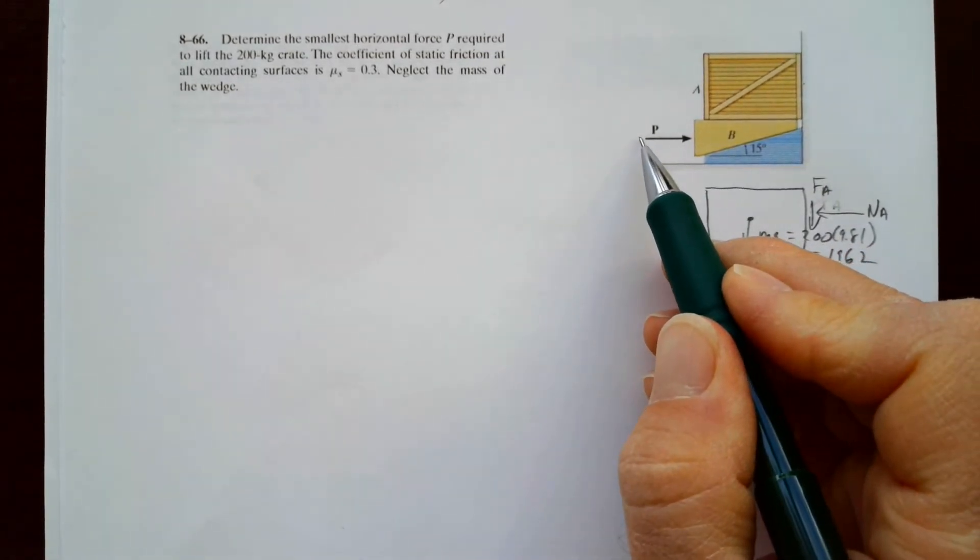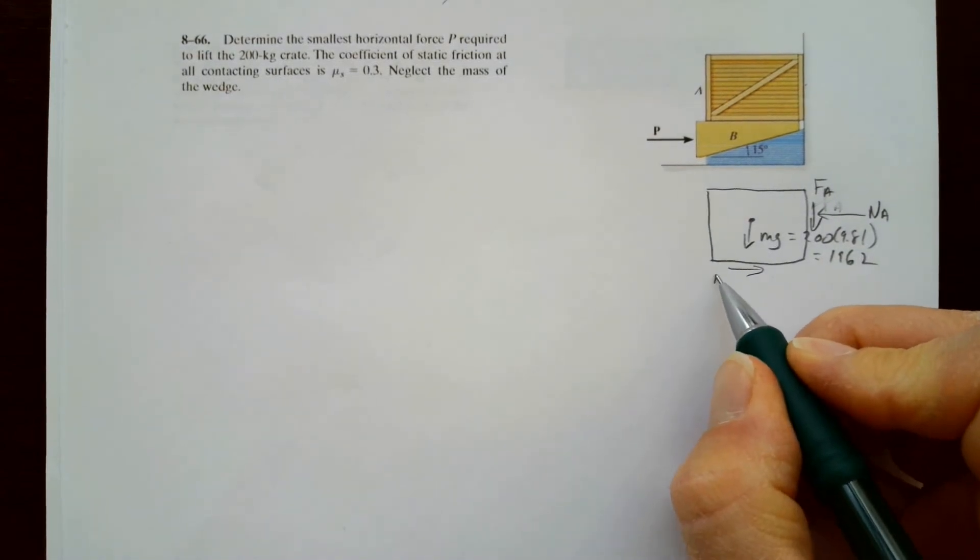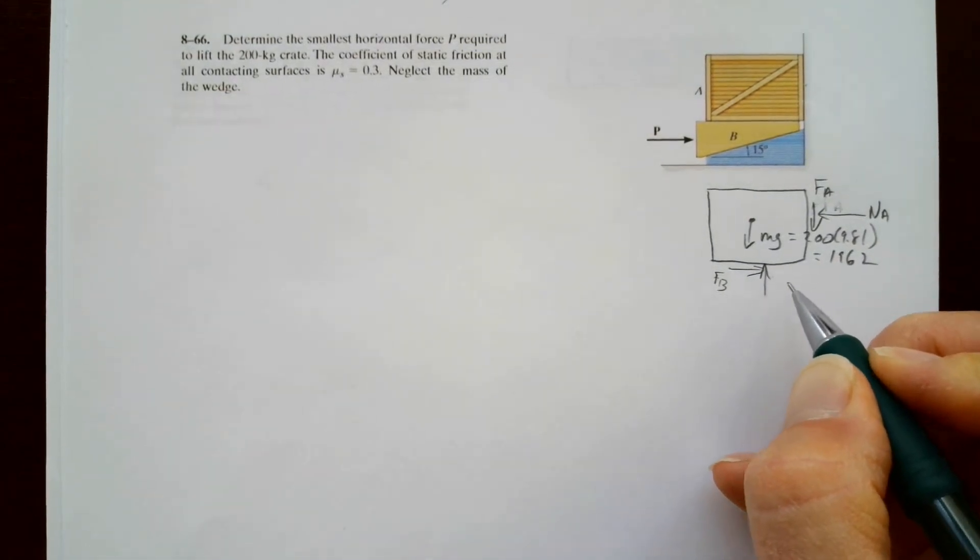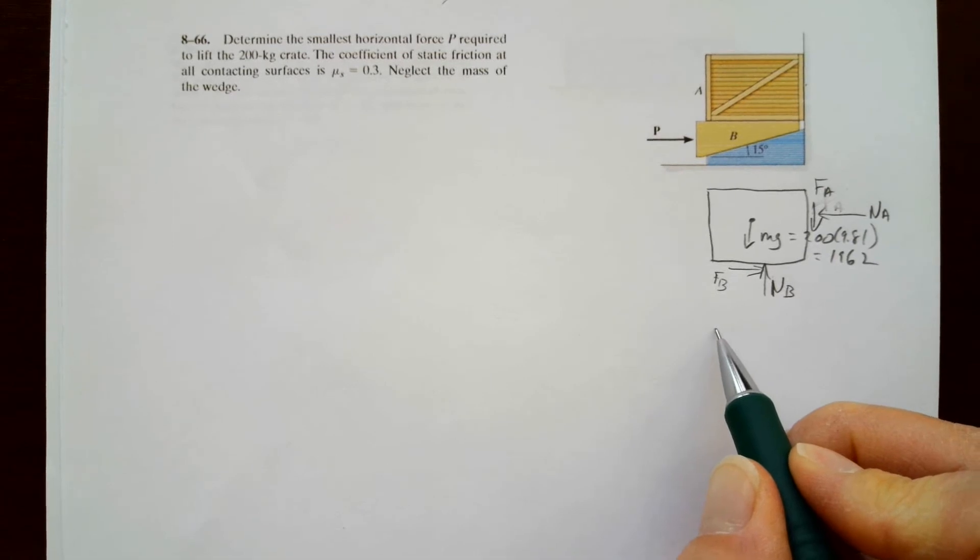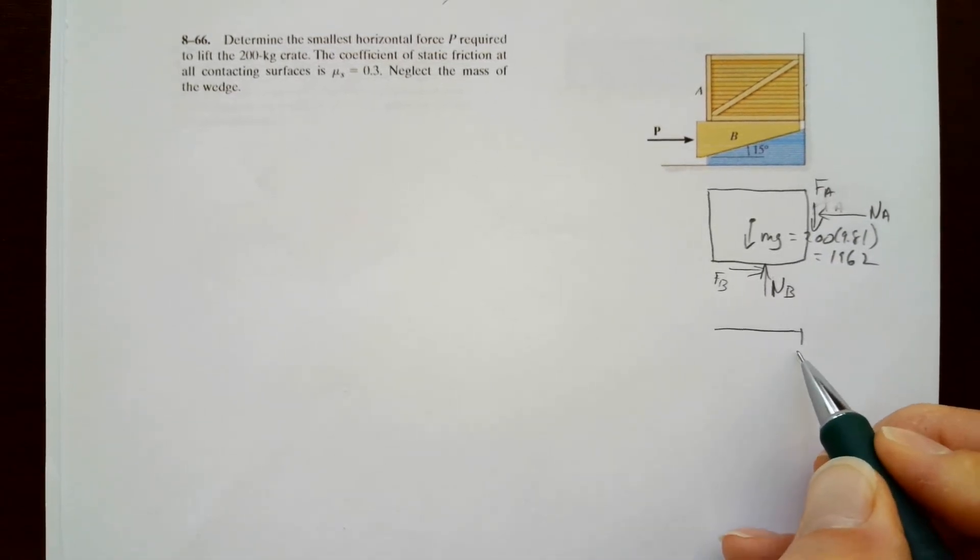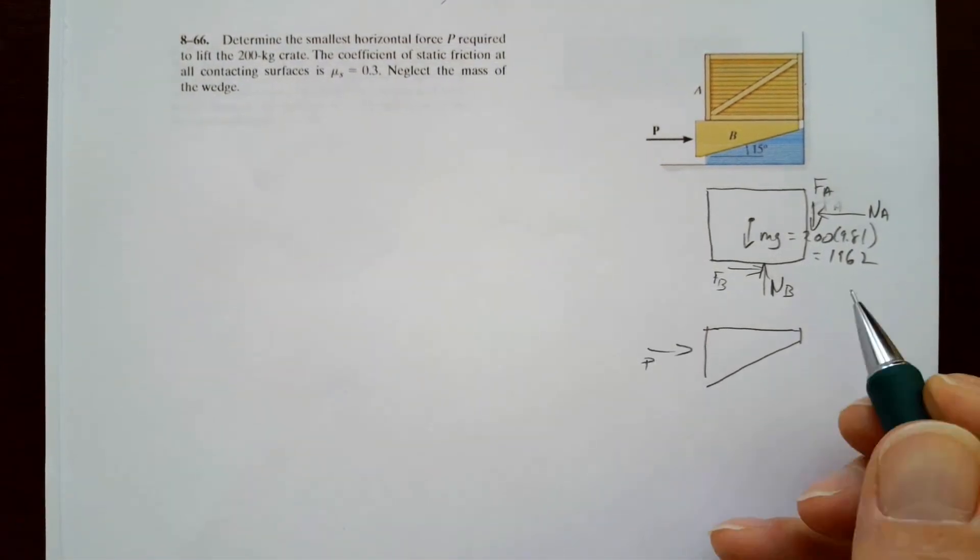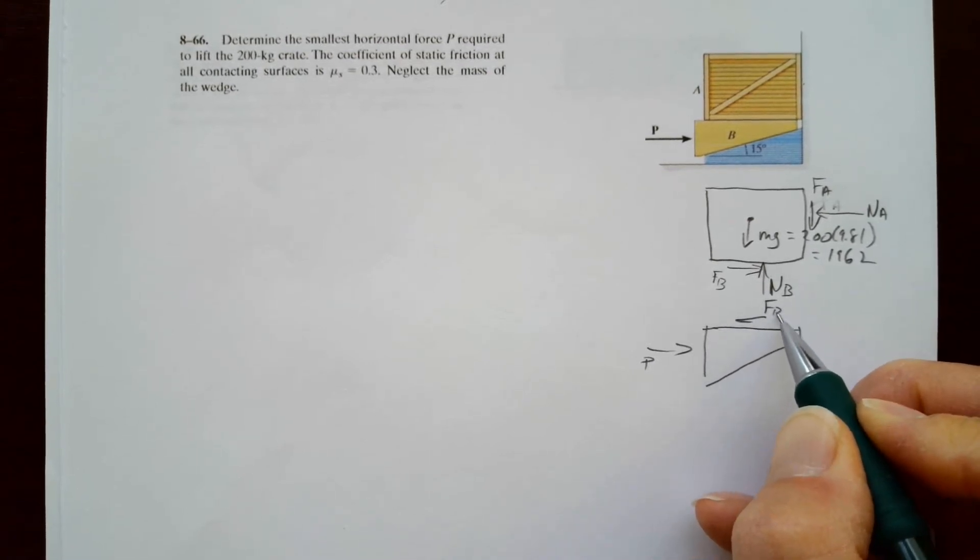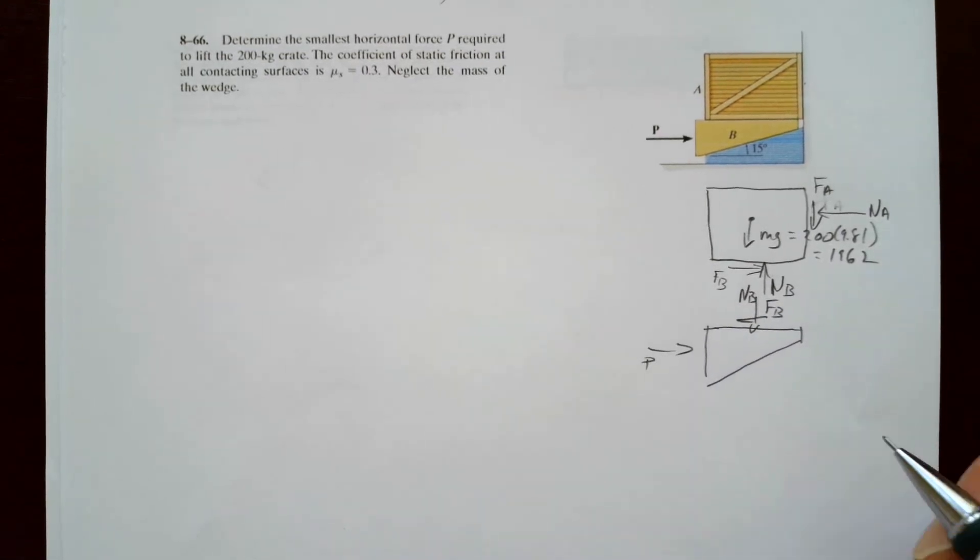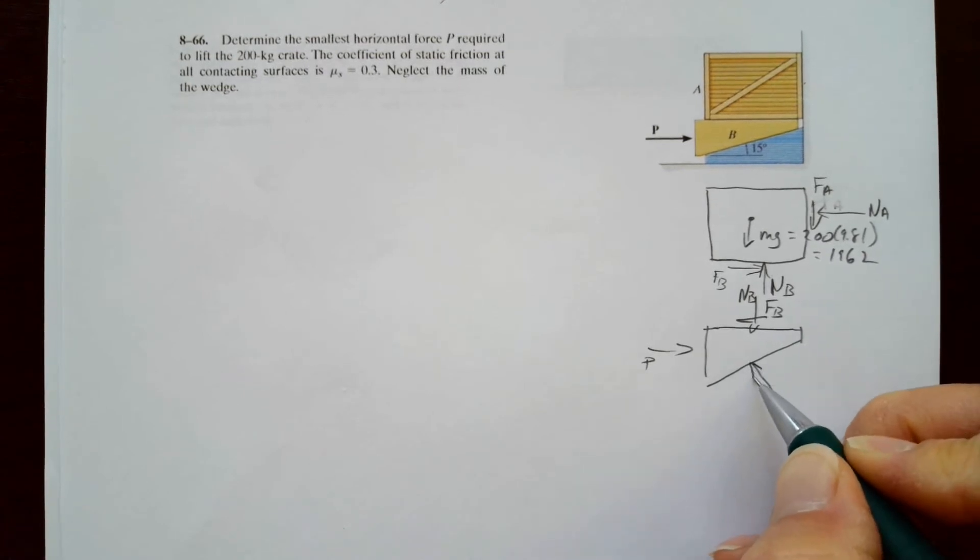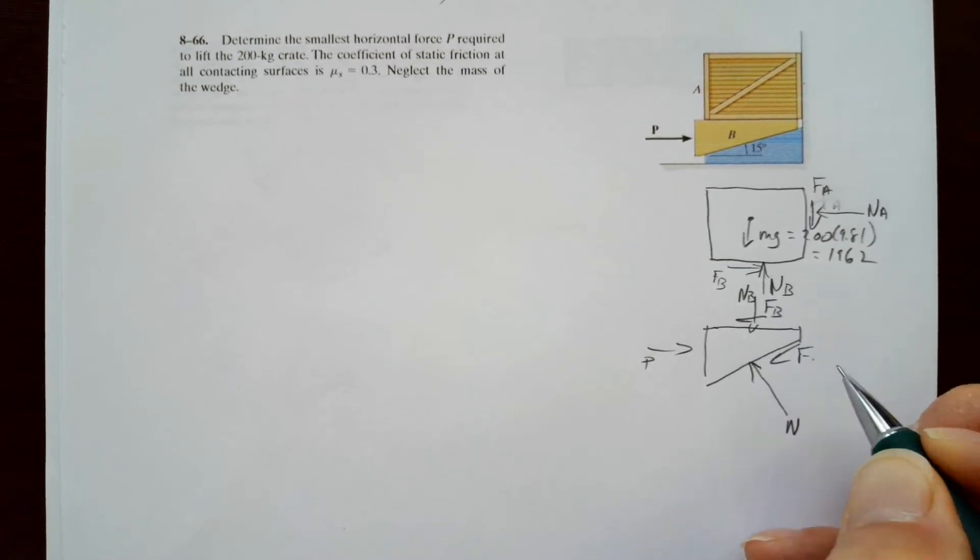As the wedge gets pushed in, it's pushing in on the crate. And so we'll call that FB. And there's a normal force up. We'll call that normal B. Now on the wedge down here, we got P over, we got FB to the left, and we got NB down. And on the incline, we have normal, and then we have friction as it tries to force it up the incline.